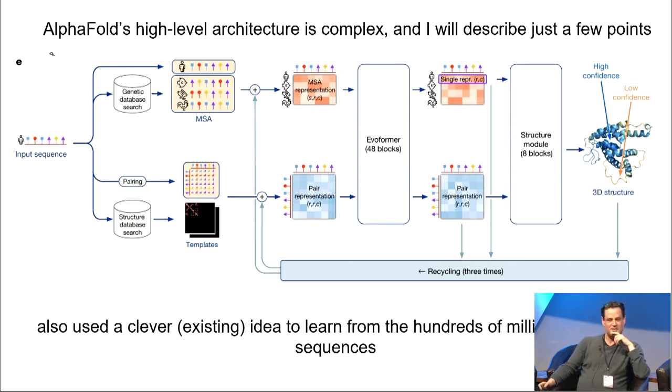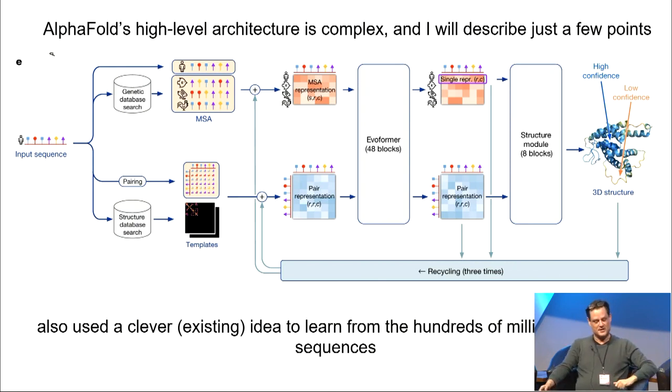There are many, many other ideas which are used. That's the broad picture. Let me just mention one of the most, probably the most important other idea. It's an old idea. It goes back about 15 years, which is not just to learn from the structure information, which was known, but to also learn from just the genetic information, which was known, which there's much, much more. There's these hundreds of millions of known sequences. It's a very clever idea.